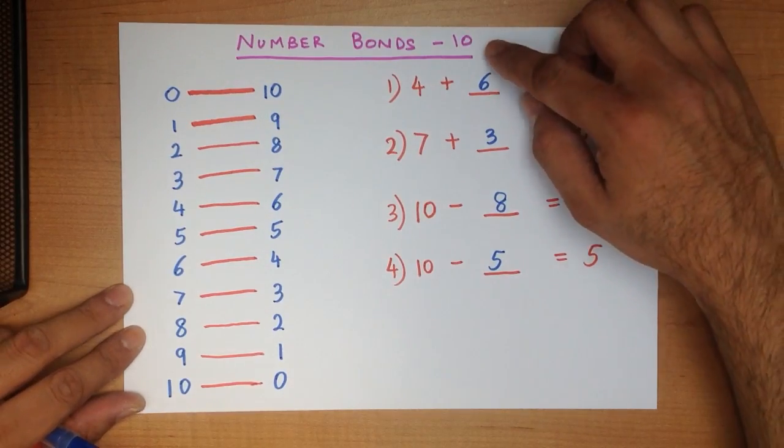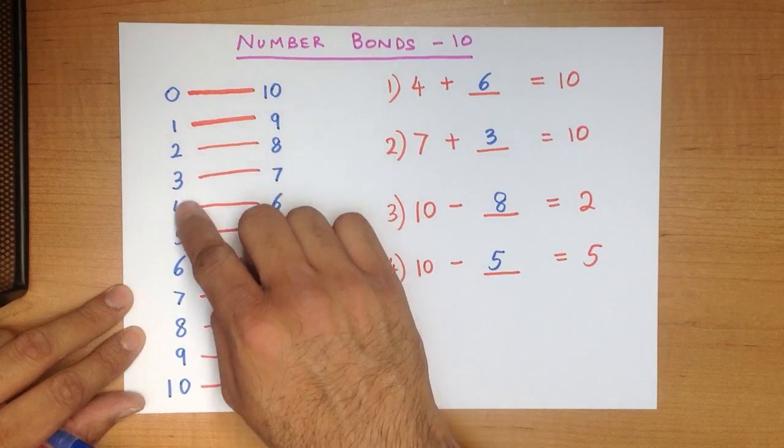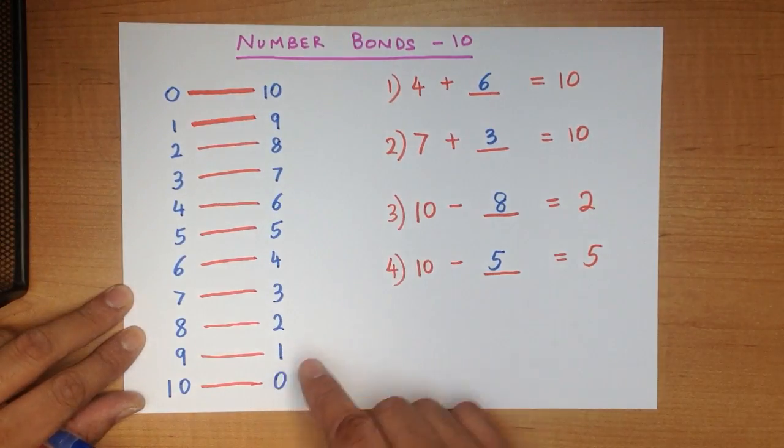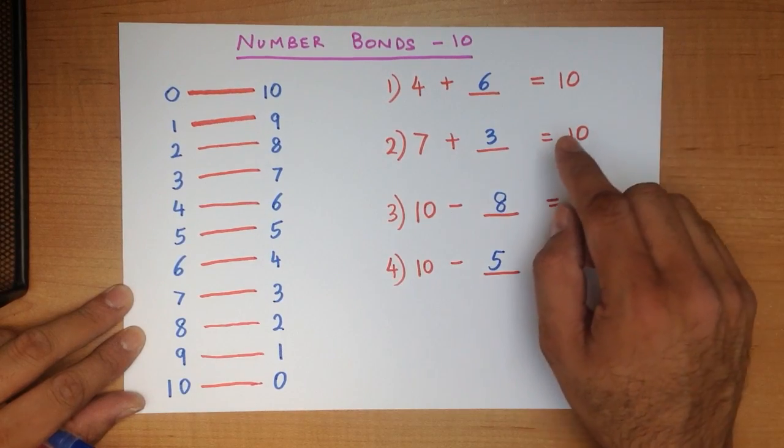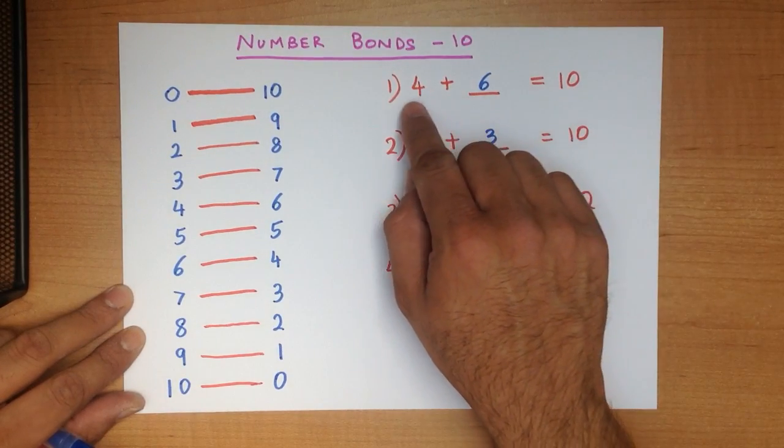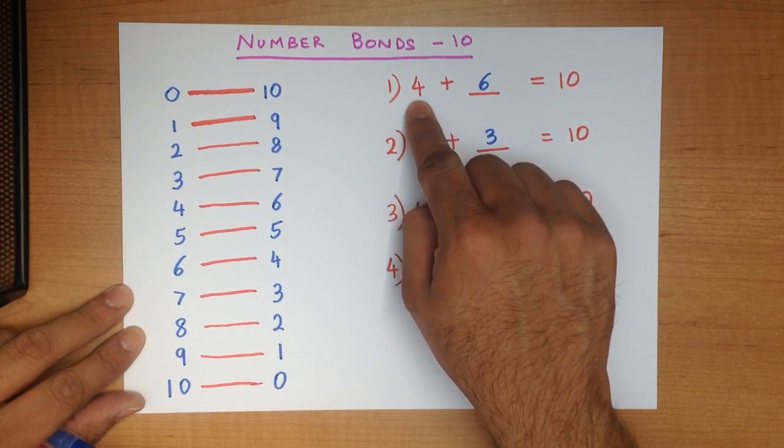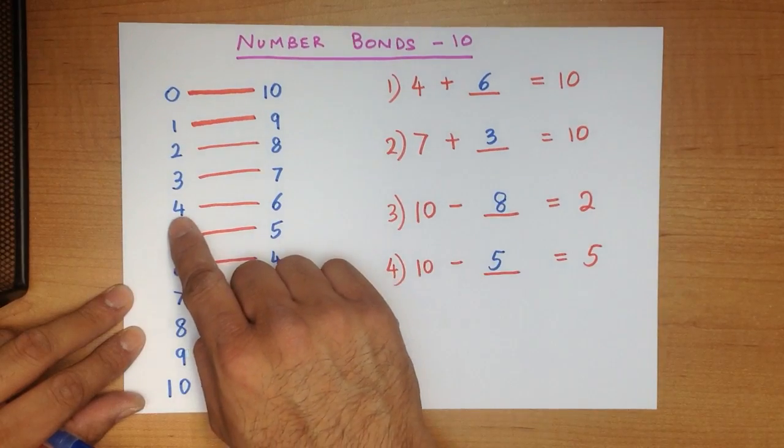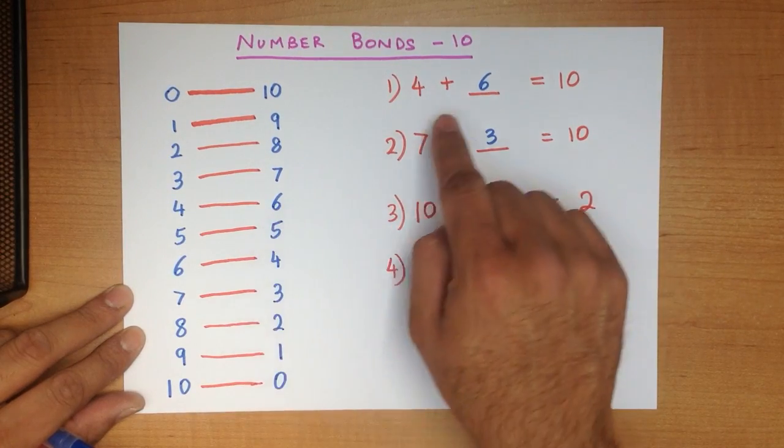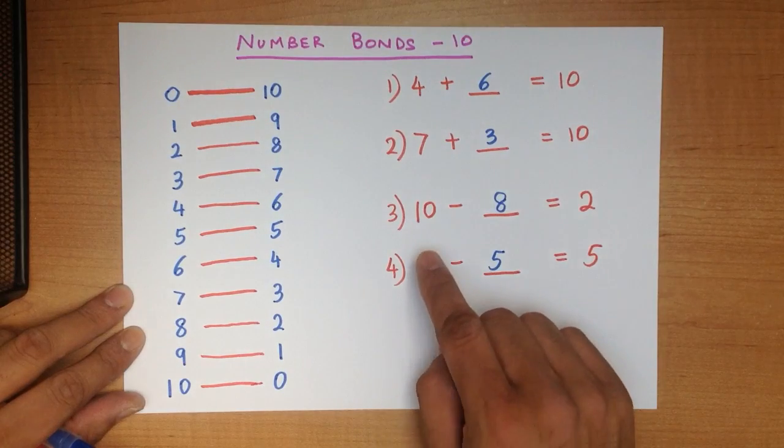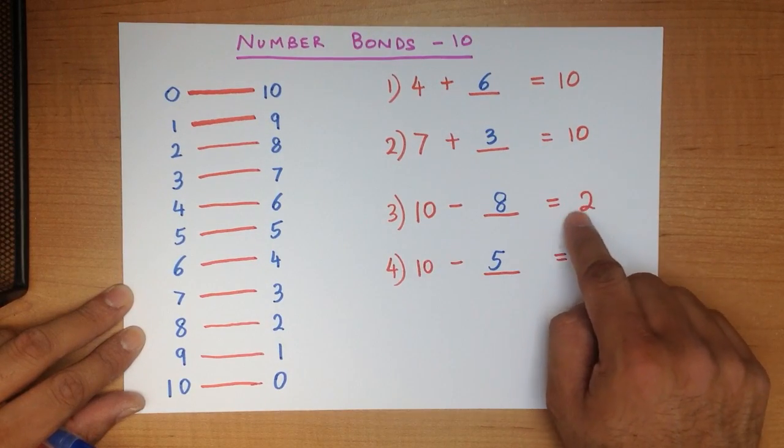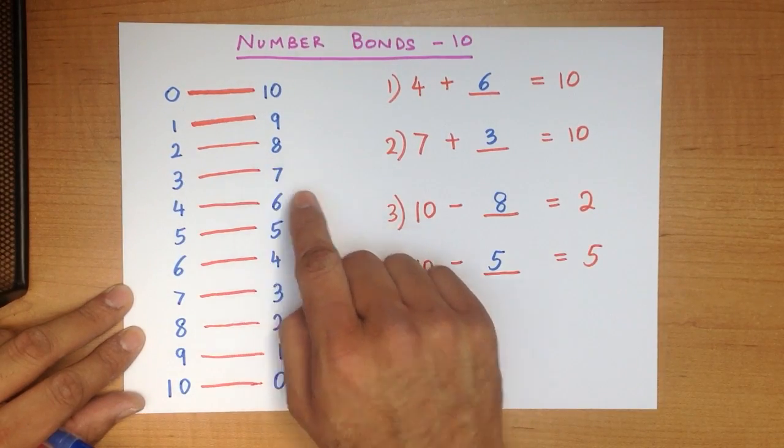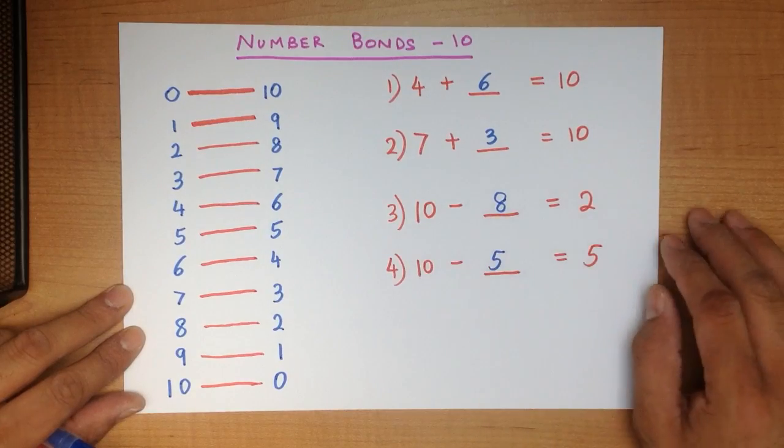The key to doing number bonds is to make sure that we write them from 0 to 10 and then from 10 to 0. When we are answering the questions, just look at the number which is not a 10. In this case it was a 4. 4 plus something equals 10. So we find 4, the other number must be 6. For a minus question, 10, the only other number we had was 2. If we go down to 2 it had to be 8. 10 minus 8 equals 2.